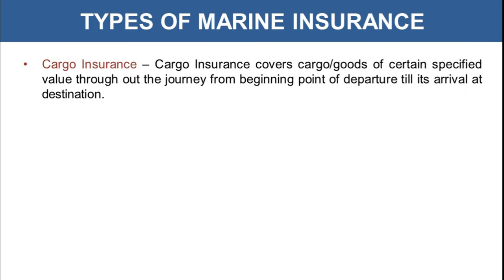Now let's see some of the types of marine insurance. First is cargo insurance. Cargo insurance covers cargo or goods — cargo being exactly the goods carried by the ship. Cargo insurance provides coverage for goods of a certain specified value throughout the journey, from the beginning point of departure till its arrival at the destination. In between the voyage, many mishappenings could occur which may lead to damage of the goods, and all that would be covered under cargo insurance.